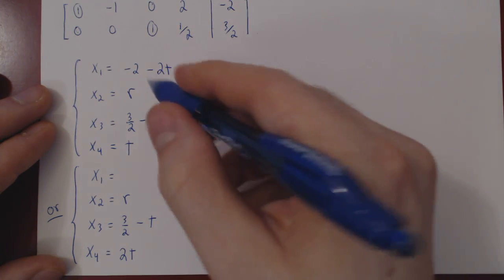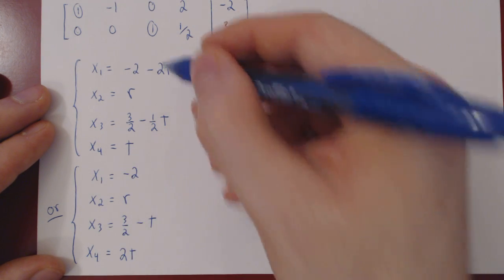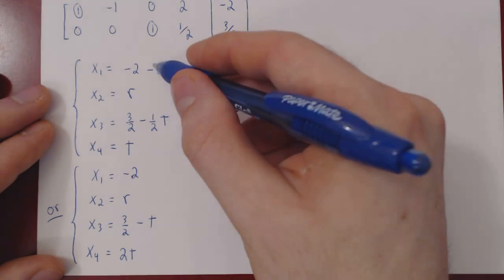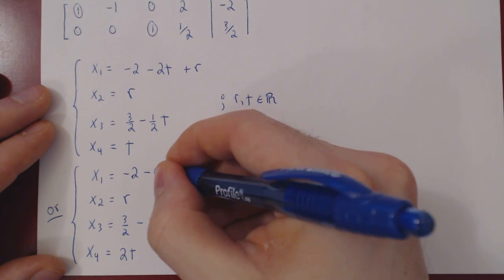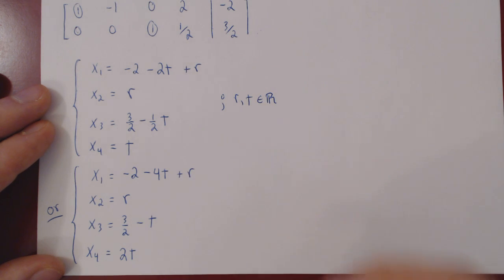So x2 stays r. Then x1 is minus 2. Minus 2 times, well, we have replaced t by 2t, so minus 2 times 2t, minus 4t, plus r, which stays r. And there you have it. Our solution set.